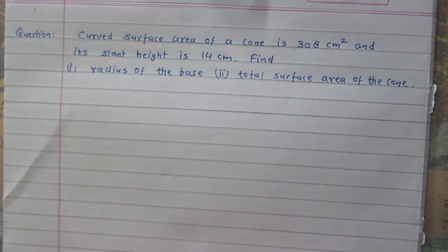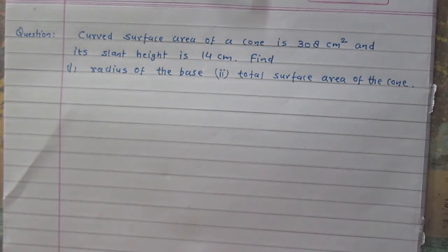We are given a cone with curved surface area 308 cm². We are given that its slant height is 14 cm, and we are to find the radius of its base and its total surface area.